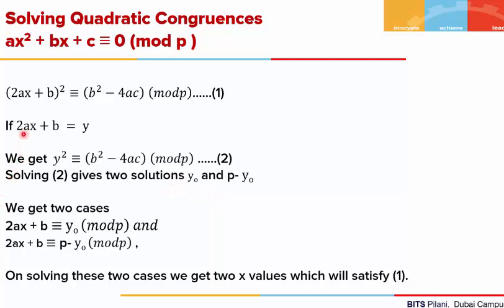Since we have taken 2ax + b = y, the first case is 2ax + b ≡ y₀ mod p, and the other is 2ax + b ≡ p - y₀ mod p. We solve these two for x, giving us the two solutions of the congruence.